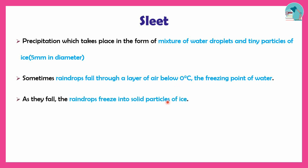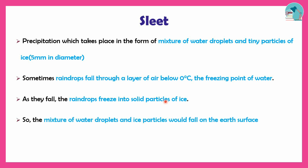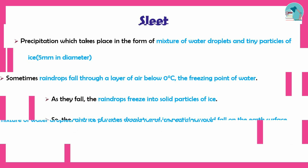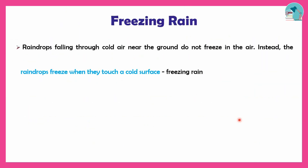Next is freezing rain. For freezing rain, similar to sleet, there are ice particles, but the ice particles will freeze to the cold surface. It depends on the rain drop freezing on the surface.